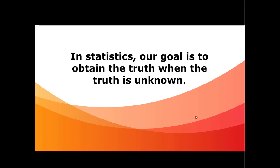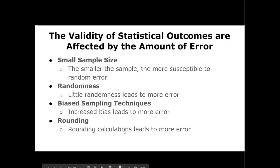We can never really know the truth, which is why we want to start to control error from the very beginning. When we make that final inference — that final guess — we want some reasonable belief that the inference we're making could be true. We want to control the amount of error from the very beginning so that we can make the cleanest inference possible, not muddled up with a bunch of noise or errors.